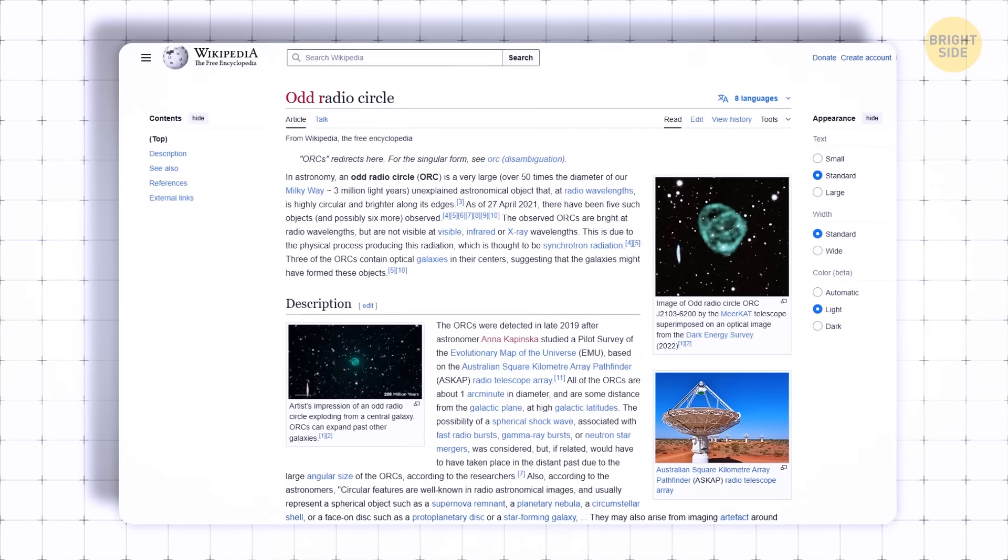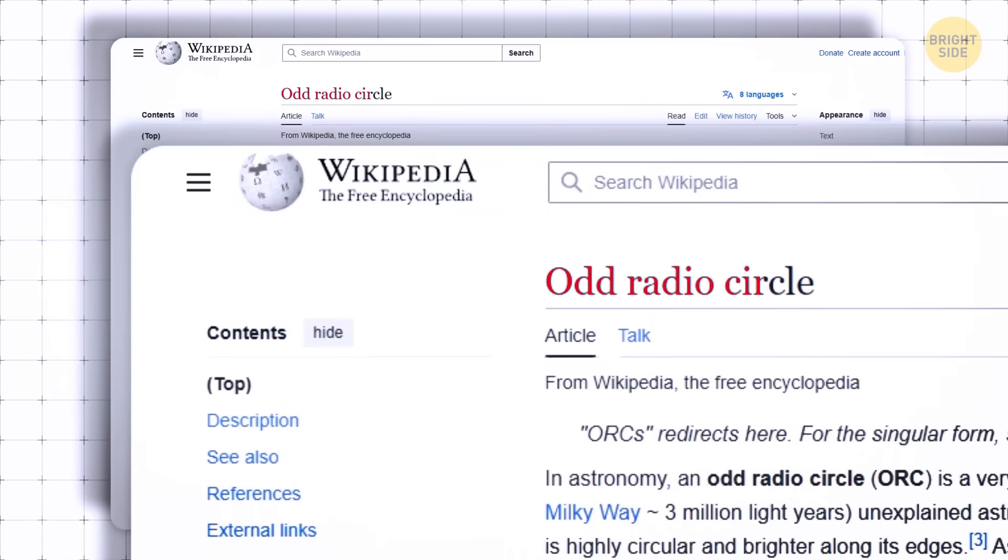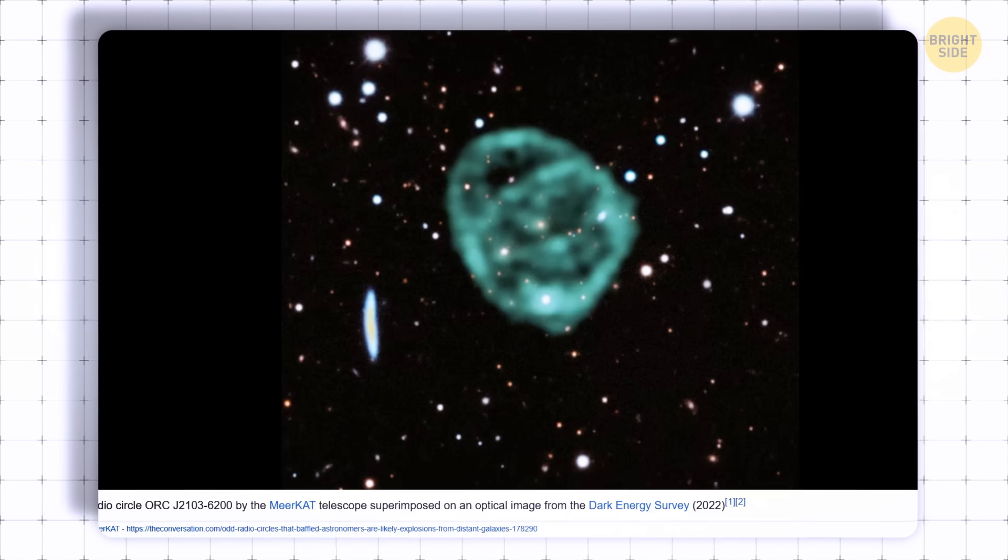Some of the faraway circles, known as ORCs, which is short for Odd Radio Circles, have already puzzled scientists.